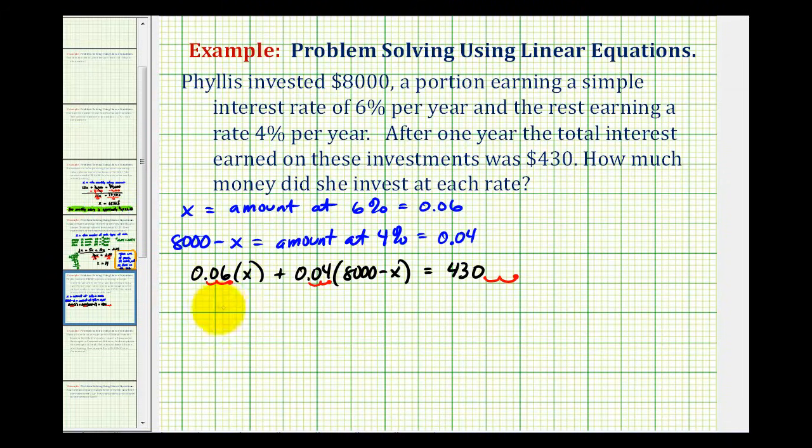So this would simplify to 6x plus 4 times the quantity 8,000 minus x equals, if we put the zeros in here, 43,000. So now we'll distribute and solve for x. So we'd have 6x plus 32,000 minus 4x equals 43,000.